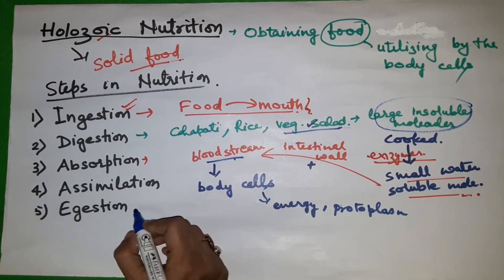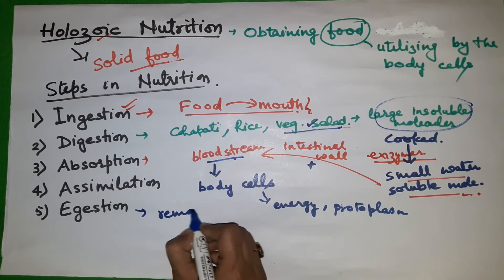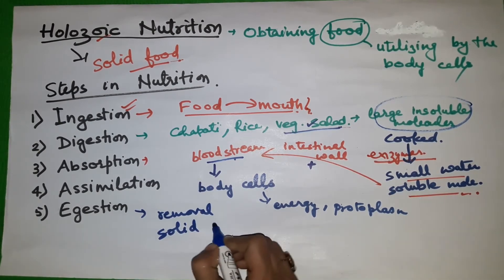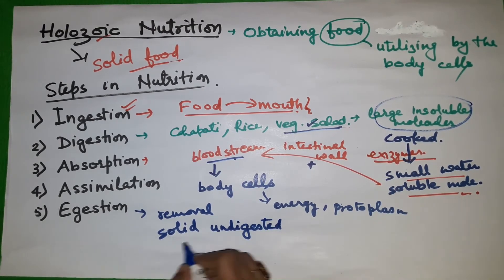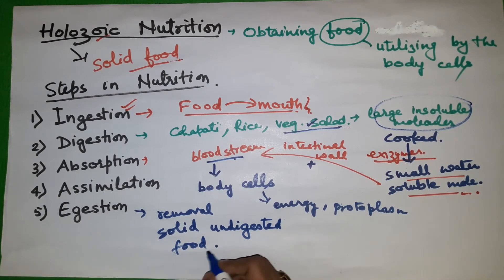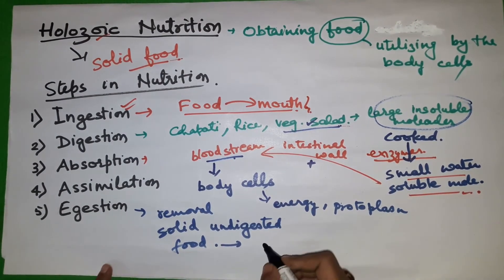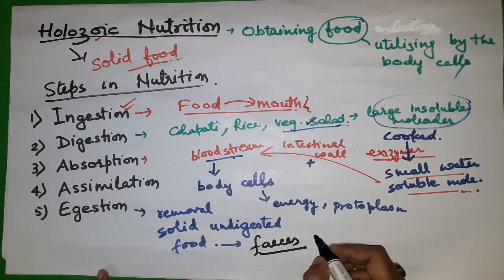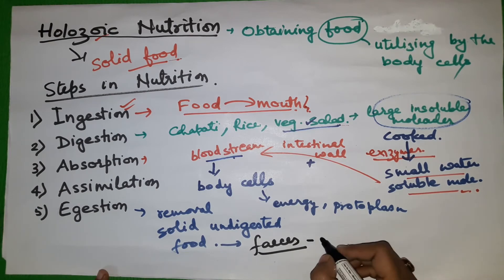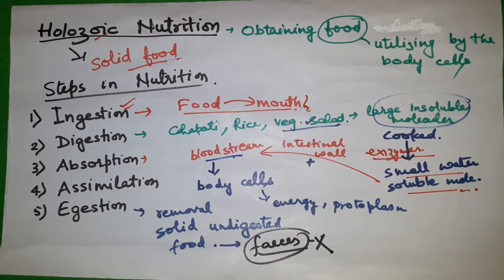The last step is egestion. Egestion is the removal of solid undigested food from the body in the form of feces. This is the unwanted waste material that cannot be utilized further.